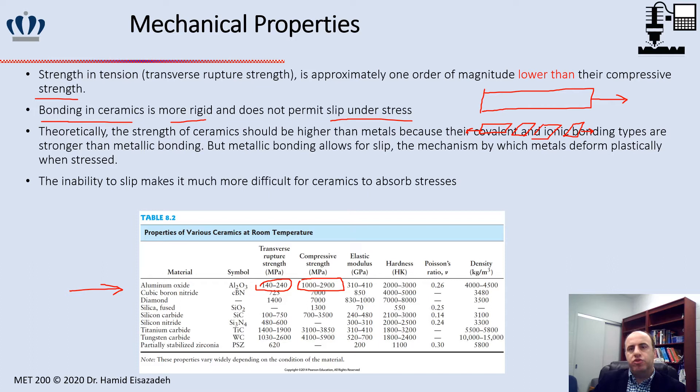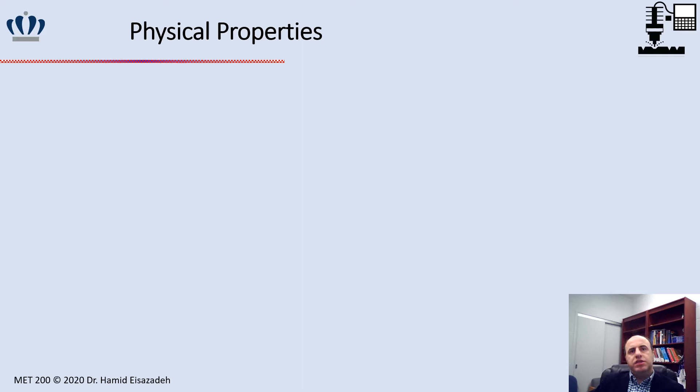The inability to slip makes it more difficult for ceramics to absorb stress. When we apply an external force, because we won't see this kind of deformation, suddenly we will have a rupture when the part is under a tensile type of load.